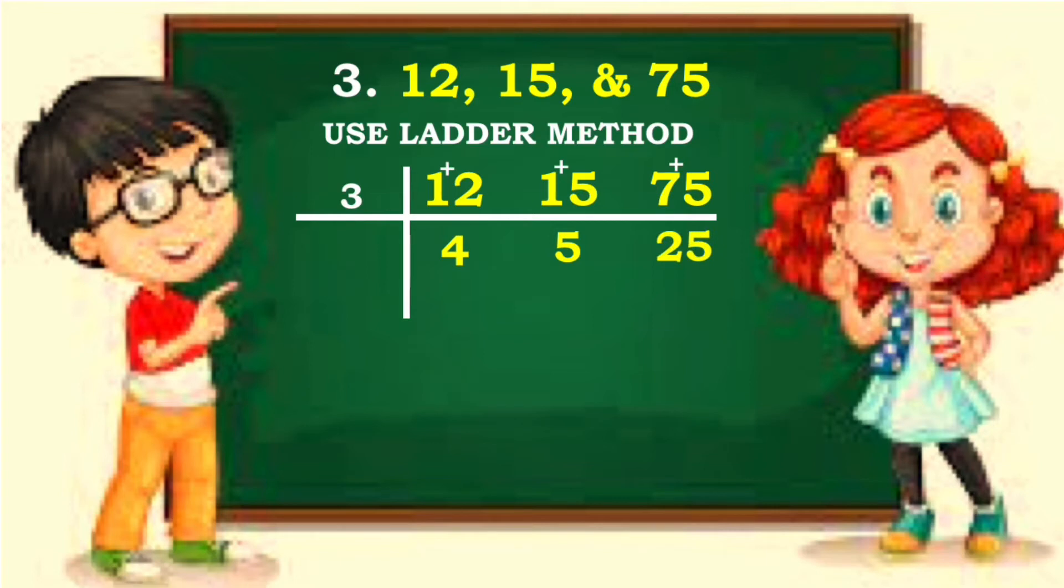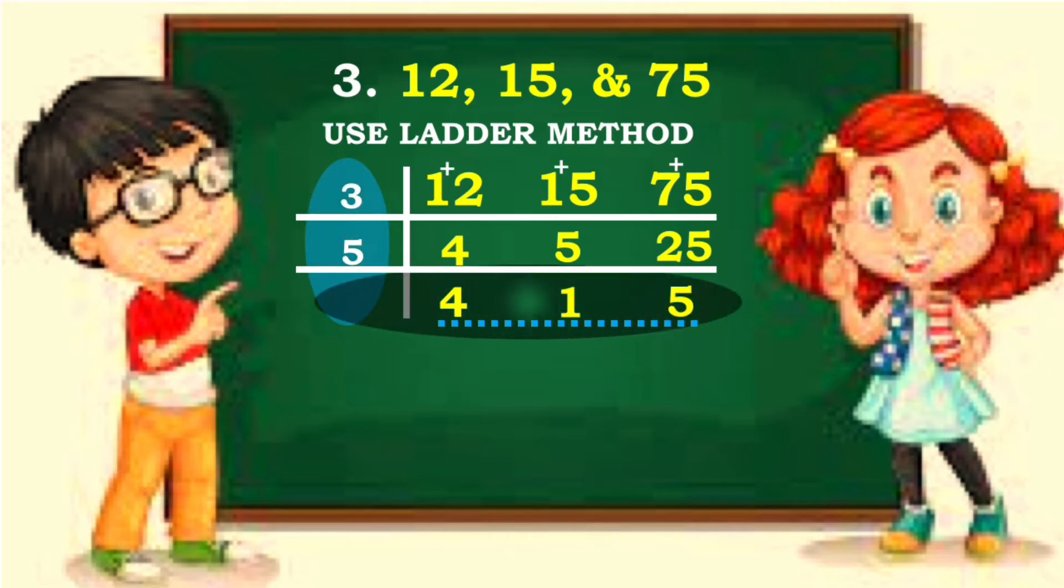Then 5 and 25 is divisible by 5. Rewrite 4. 5 divided by 5 is 1, 25 divided by 5 is 5. The last quotients have no common factors already. Multiply all the divisors and all the last quotients.